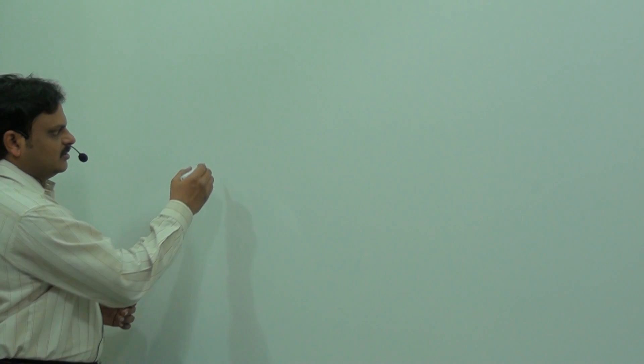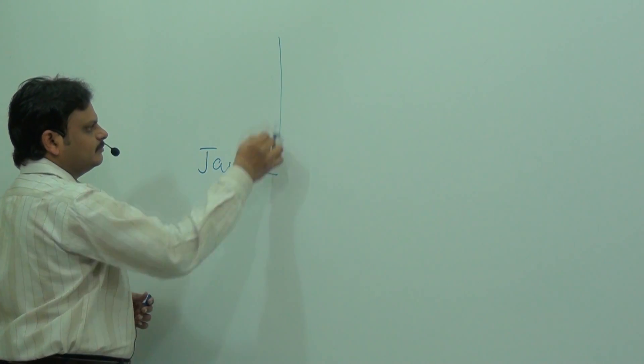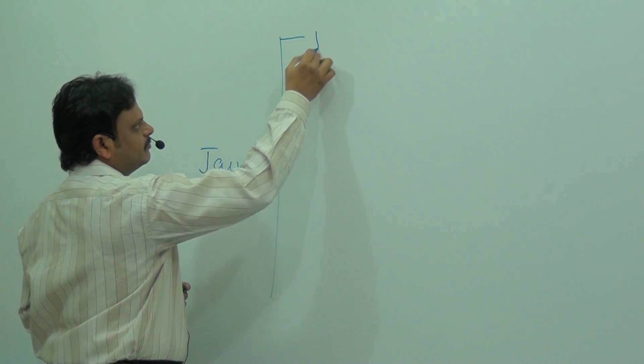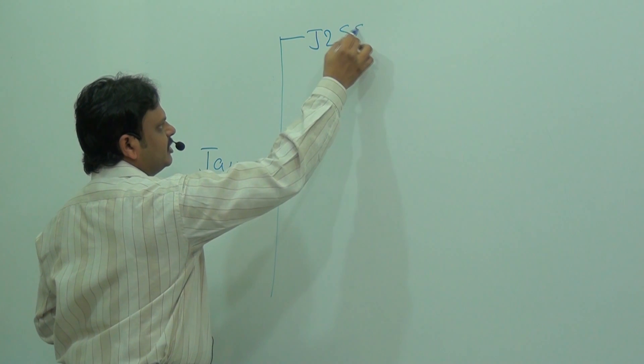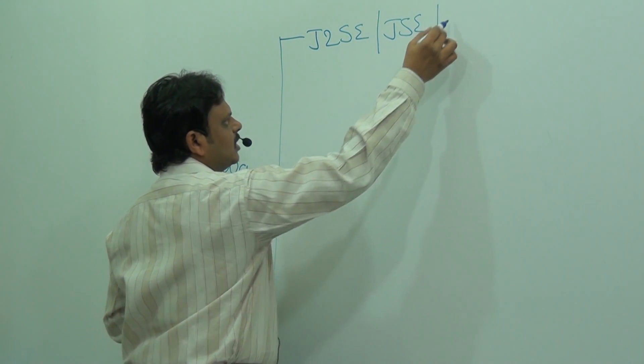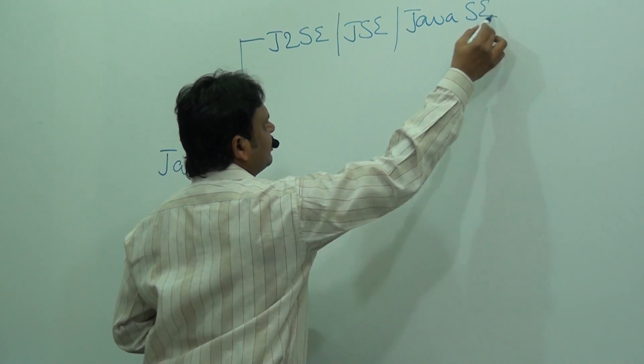Where exactly is JSF located? To identify the location of JSF, we need to understand that Java is basically divided into three parts. The first one is J2SE — Java 2 Standard Edition — which has different names available.